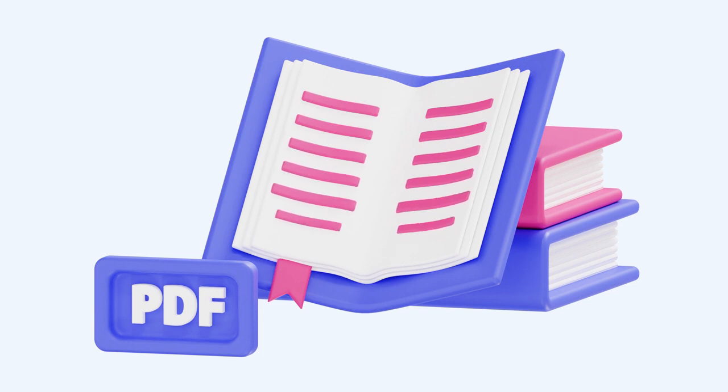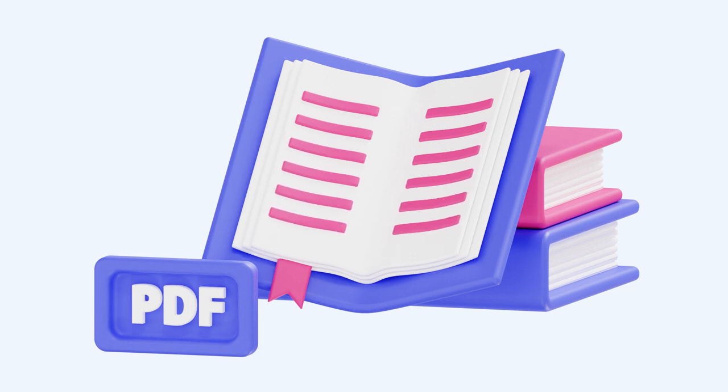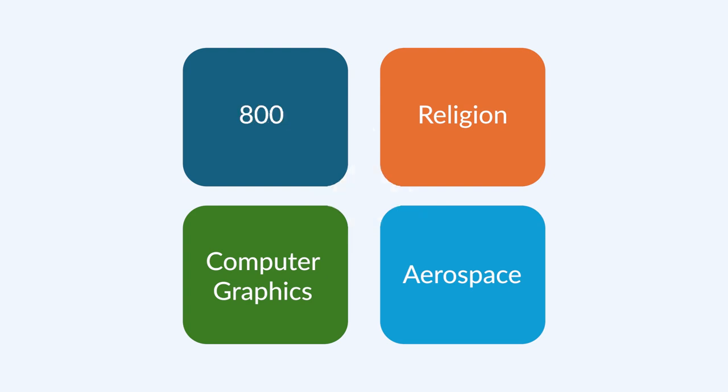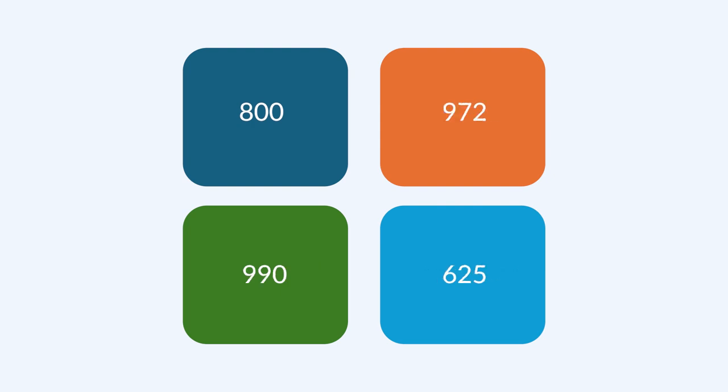As an example, we have data from around 3,400 documents and we know in advance that they are grouped into four topics: Atheism, Religion, Computer Graphics, and Aerospace. We run our K-means clustering algorithm and obtain, for each category, the number of elements assigned to it — for Atheism, 800 documents; for Religion, 972; and so on.